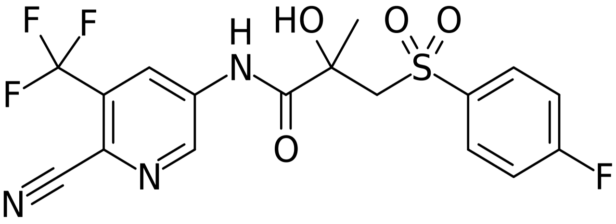5-N-bicalutamide, or 5-azabicalutamide, is a highly potent nonsteroidal antiandrogen which was discovered in 2016. It is a structural modification of bicalutamide, differing from it only by the replacement of a carbon atom with a nitrogen atom in one of its phenyl rings.